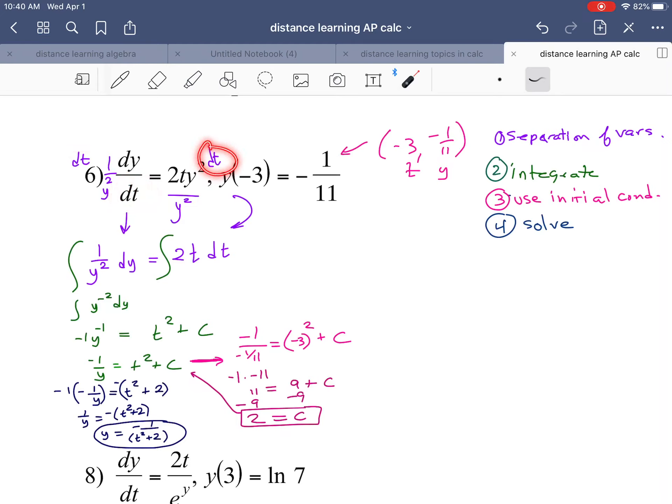And to get rid of this dt, I'm multiplying by dt on both sides. The result on the left: 1 over y squared dy, on the right: 2t dt.